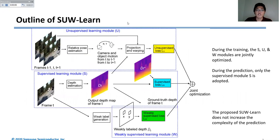Here is the overview of our SUW-Learn framework. It consists of three modules: supervised learning S, unsupervised learning U, and weakly supervised learning W. During training, these three SUW modules are jointly optimized. In contrast, during prediction, only the supervised learning module S is utilized. This means the proposed SUW-Learn framework doesn't increase any complexity during prediction.